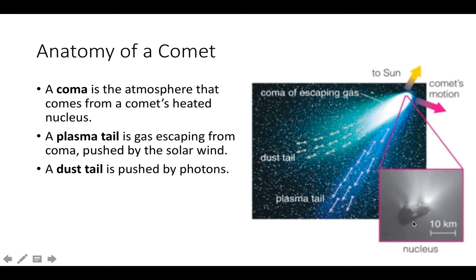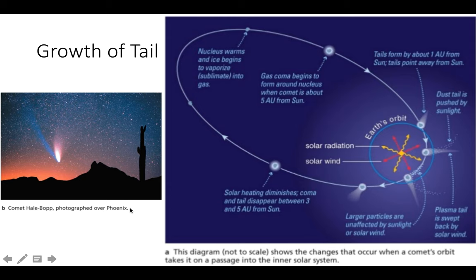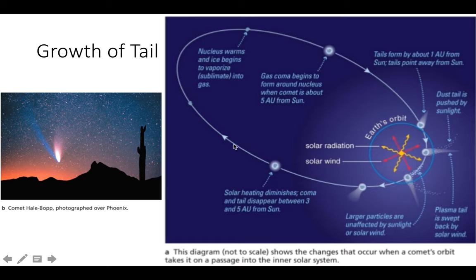Comets have a really weird elliptical pathway. As a comet gets closer to the sun, the nucleus warms, ice begins to vaporize and sublimate, and we start to see fuzziness around the nucleus. The tail is always pointing away from the sun because of the solar wind. We have dust tails pushed by photons or sunlight, and once it is done orbiting the sun, it will go back to its origin.